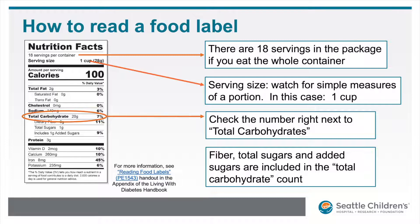First, check the serving size — the food label lists the nutrients that the serving size will provide. Second, check the grams of total carbohydrates. You will not be using the percentage; grams of carbohydrates are found right next to the total carbohydrate. You don't need to do any additional math adding or subtracting from the total carbohydrate count. In this example, one cup of Cheerios contains 20 grams of carbohydrates. If the child eats one cup of Cheerios and nothing else, you will use 20 grams of carbs in the insulin dosing calculation.